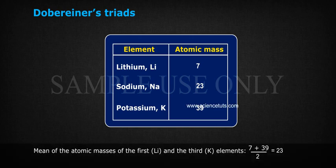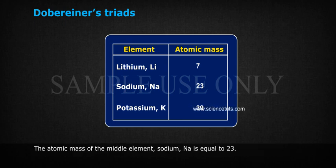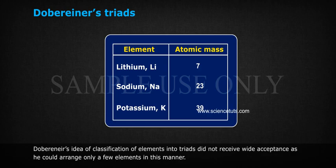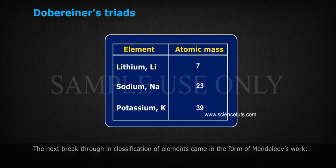The mean of the atomic masses of the first element Li and the third element K is (7 + 39) / 2 = 23u, which equals the atomic mass of the middle element sodium (Na = 23u). However, Dobreiner's idea of classification of elements into triads did not receive wide acceptance, as he could arrange only a few elements in this manner. The next breakthrough in classification of elements came in the form of Mendeleev's work.